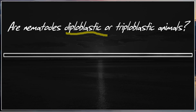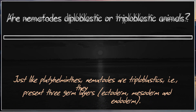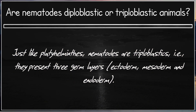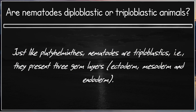Are Nematodes diploblastic or triploblastic? Just like Platyhelminthes, Nematodes are triploblastic. That is, they have three germ layers: ectoderm, mesoderm, and endoderm.